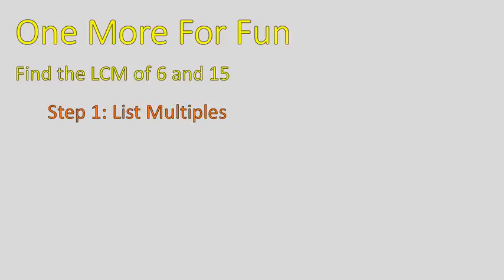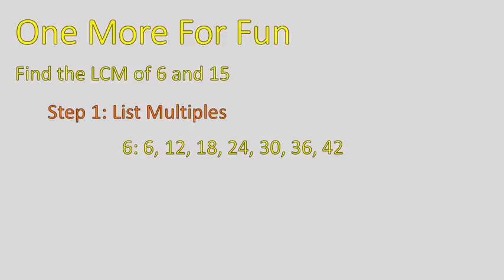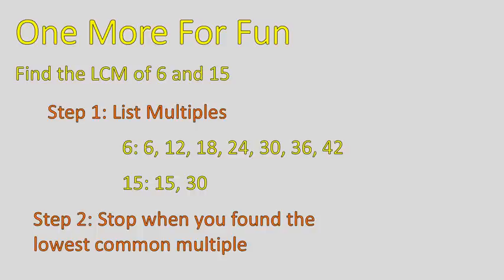Welcome back. The steps for finding the least common multiple are to list the multiples. We'll start with 6 — listing out the multiples: 6 times 1, times 2, times 3, times 4. Now I'm going to list the multiples of 15: 15 times 1, 15 times 2, and I stop because I found a common multiple — 30. Once you get good at this, you might not need to list as many multiples. You might start recognizing ones that are common. That's the basics of finding the least common multiple.